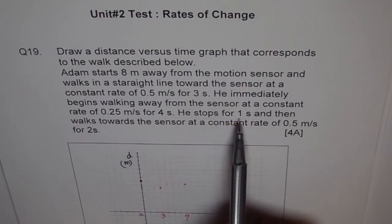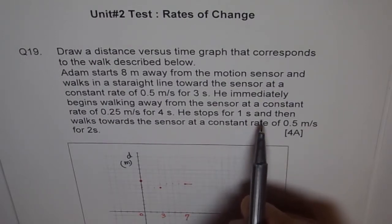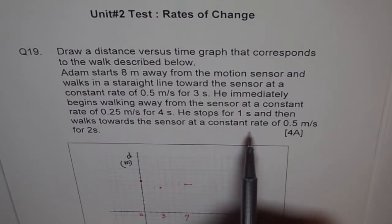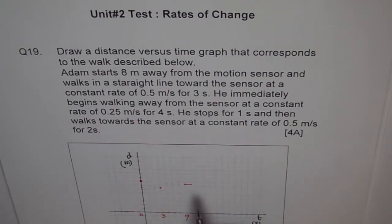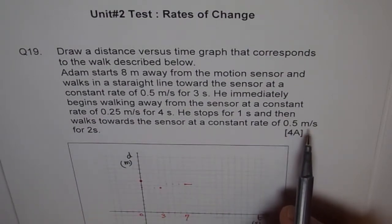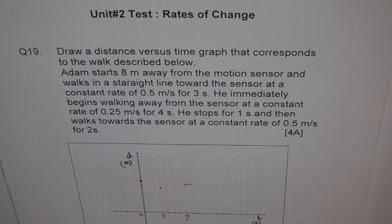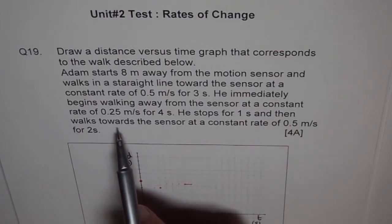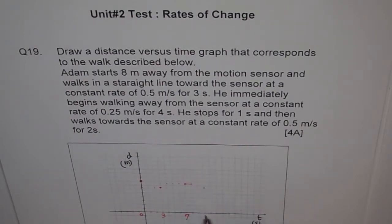Now he stops for 1 second — that means we are at the same level, stops for 1 second. And then walks towards the sensor at a rate of 0.5 meters per second for 2 seconds. So the distance covered is 2 times 0.5, which is 1 meter. So he comes closer by 1 meter — 1 meter in 2 seconds. And this point comes at 9 seconds total.